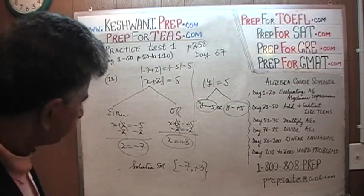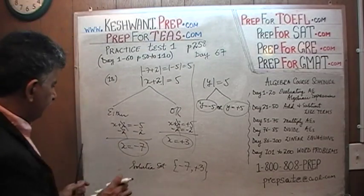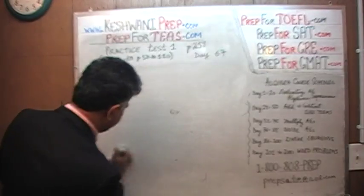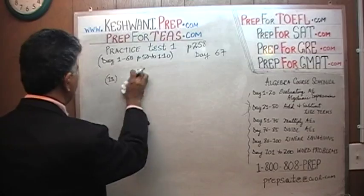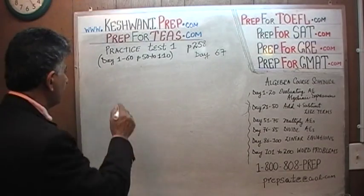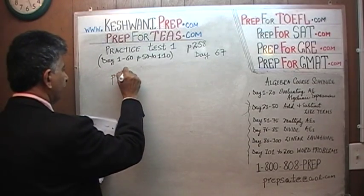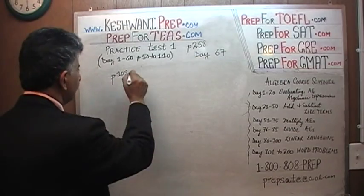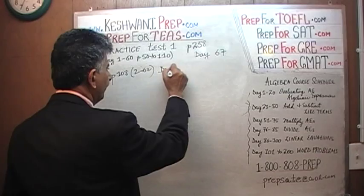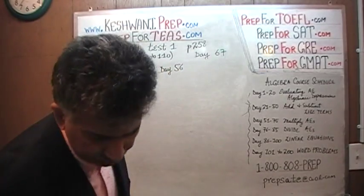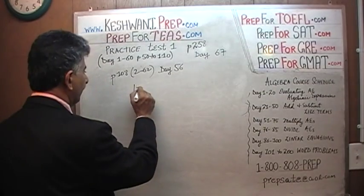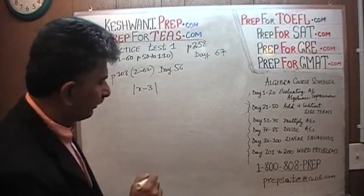Let's do one more problem dealing with absolute value just to get some practice. This problem is something that appeared on page number 108 as problem number 2.62, something we did on day number 56. Let's do it again one more time just for the practice. The absolute value of x minus 3 is equal to 5.